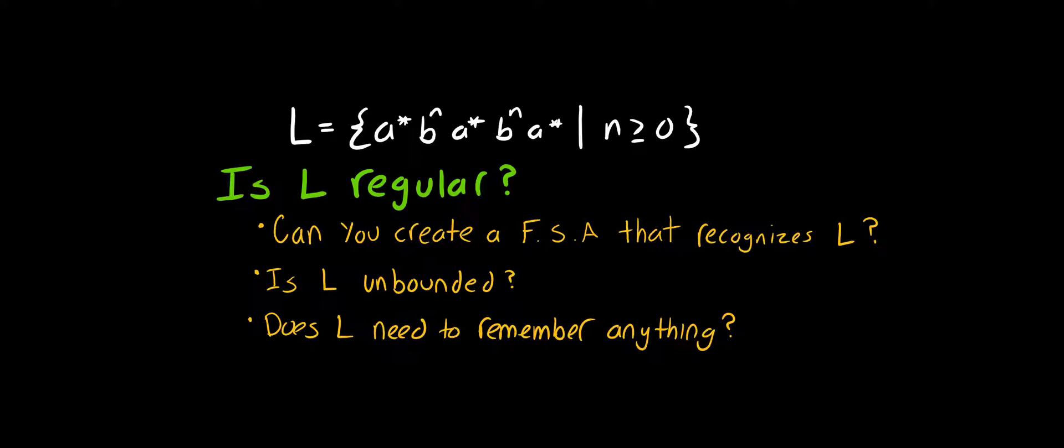Now the question is, is this language L regular? We have a few different ways to determine if a language is regular. One is to create a finite state automata that recognizes L. By definition of a regular language, if there's a finite state machine that recognizes it, then it is regular. We could attempt to do that, but it could take a long time. The next thing we could check is the bounds of L. In this case, L is bounded with a lower bound of 0, but it doesn't have an upper bound. And that's really important in determining whether it's a regular language or not.